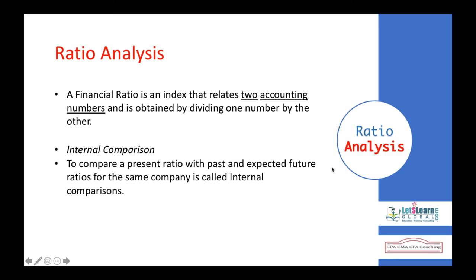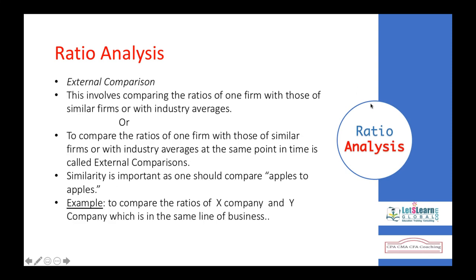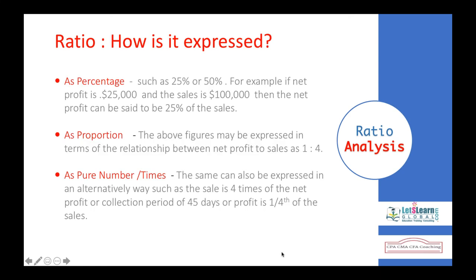A ratio is a number expressed in terms of another. We are expressing one number called the numerator in terms of the other called the denominator. For example, we have a gross profit of $50,000 over net sales of $1 million, so gross profit is expressed as a percentage of net sales. Likewise, we express current assets in terms of current liabilities.